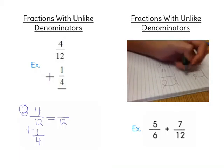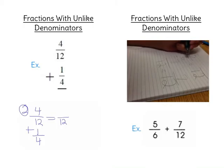Since this is the same, just leave it as it is. Then you ask yourself, six times what equals twelve, which is two. Then you do five times two, which equals ten.